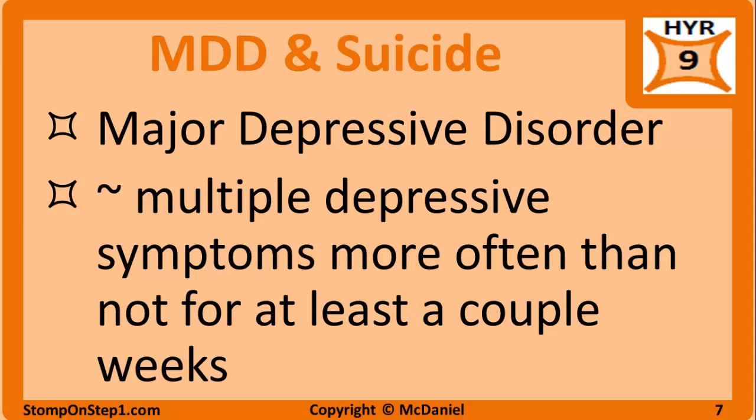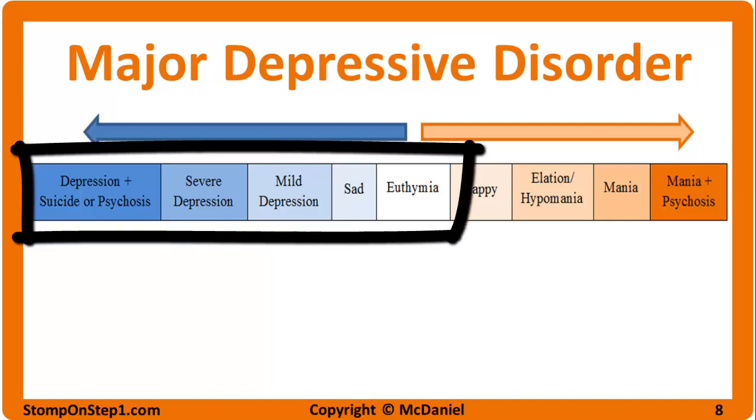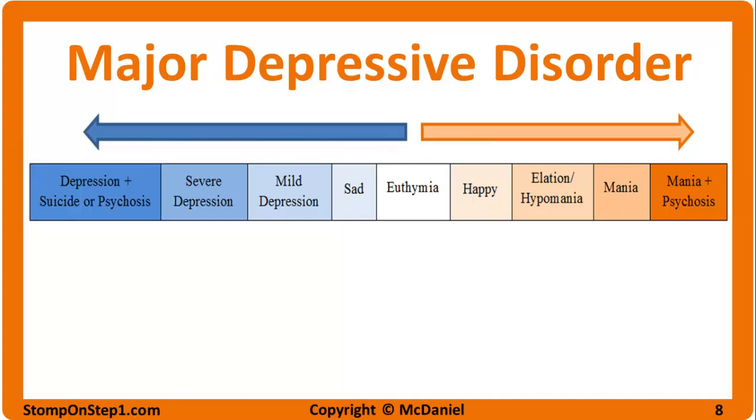Major depressive disorder is a depressive disorder with very specific DSM criteria involving a certain number of symptoms over a specific time period. The details of those criteria are beyond the scope of USMLE Step 1, so they won't be covered here. All you need to know is that MDD involves having multiple moderate to severe depressive symptoms more often than not for at least a couple of weeks. We will cover treatment options for MDD in a later video. For MDD, the patient will experience the left-hand side of our mood continuum — they may occasionally be euthymic, but more often than not will have moderate to severe depressive symptoms.